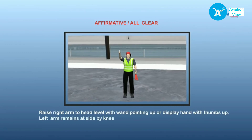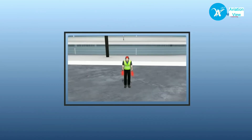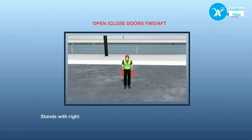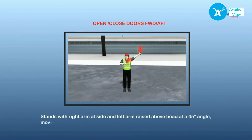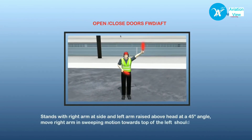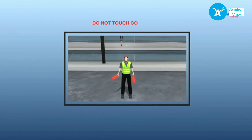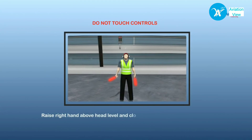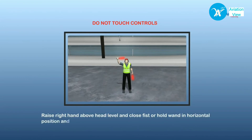There are also standard communication signals: thumbs up indicates affirmative or all clear, and thumbs down symbolizes negative. When the marshaller needs to tell the captain to open or close doors — fore or aft — he stands with right arm at side and left arm raised above head at a 45-degree angle, moving the right arm in a sweeping motion towards the top of the left shoulder. To indicate that the captain must not touch controls, he raises his right hand above head level and closes it in a fist or holds it horizontally, while his left arm remains at his side by the knee.